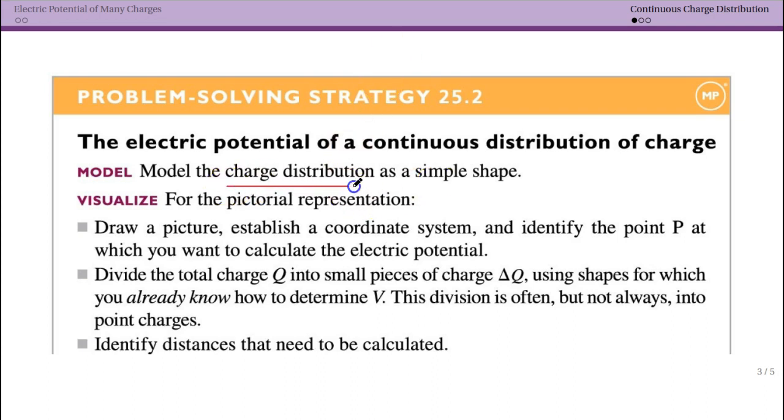First, we need to model the charge distribution as a simple shape. What does that mean? Well, if I give you a finite wire that's still pretty long, you might as well simplify that to be infinitely long. If you're looking at a wheel, you probably want to approximate that as a disk, and so on. So simplify your shape until it's something you can mathematically model pretty simply.